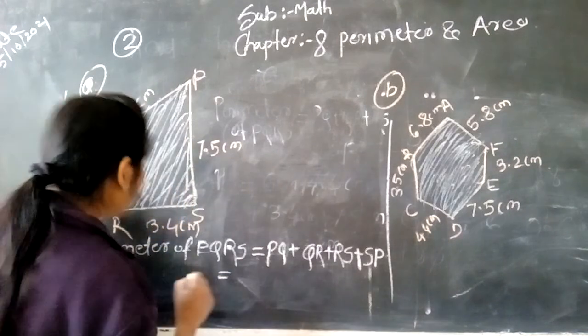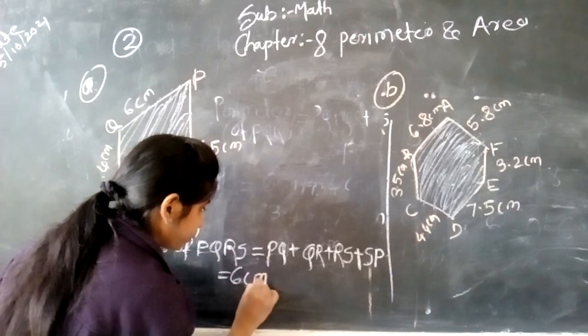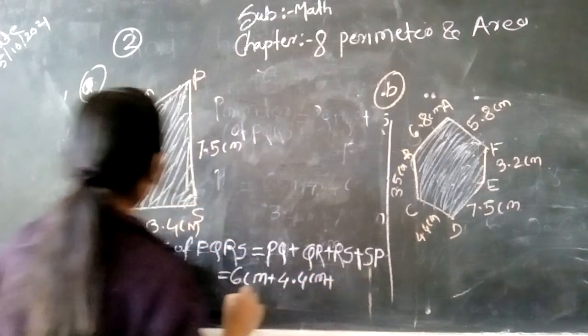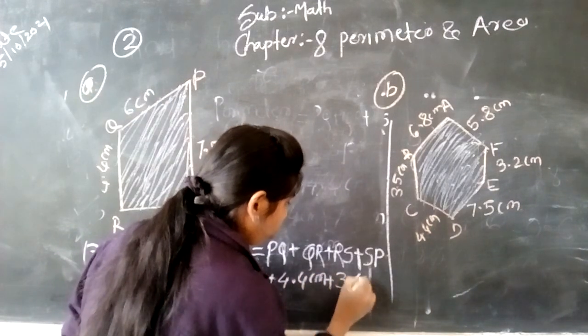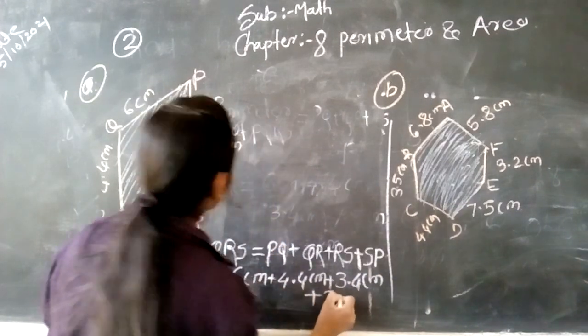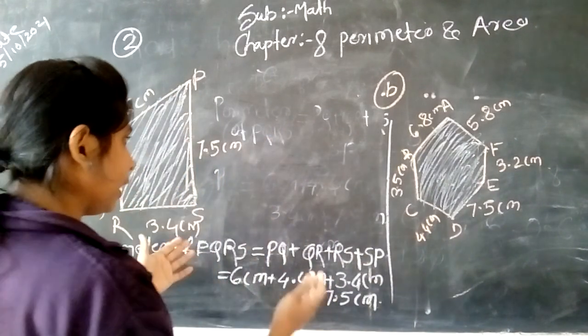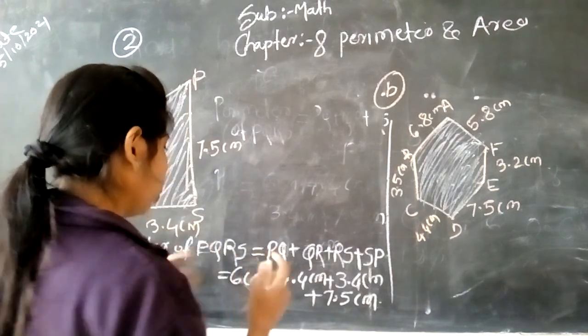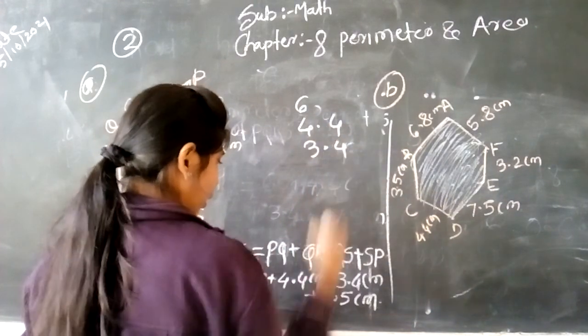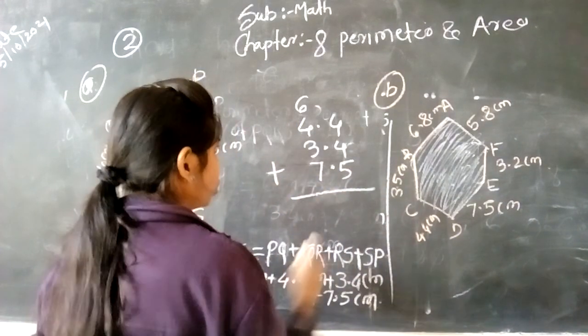Okay students, so in the PQ side the dimension is 6 cm plus 4.4 cm plus 3.4 cm plus 7.5 cm. So we add all these and calculate.